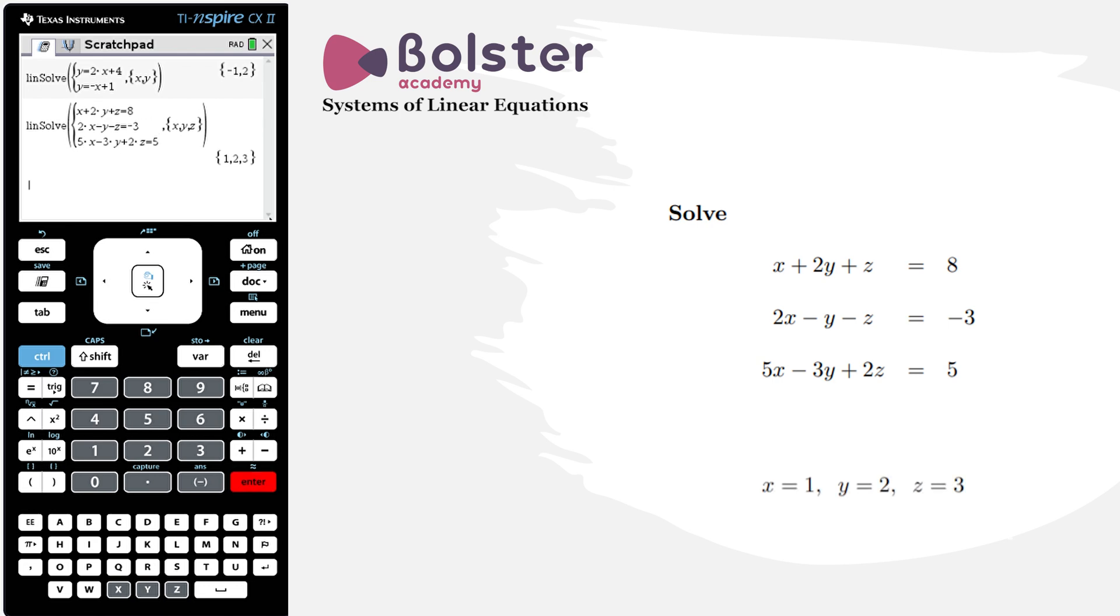I hit enter and I get my solution. The main thing to understand here is we're given a 3D coordinate, so it's saying that x is equal to 1, y is equal to 2, and z is equal to 3. So the order that you've input your variables, that's the order of the output of the solutions.